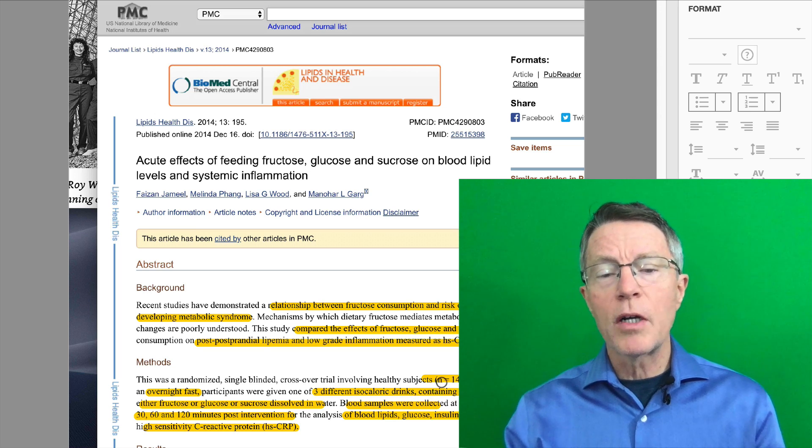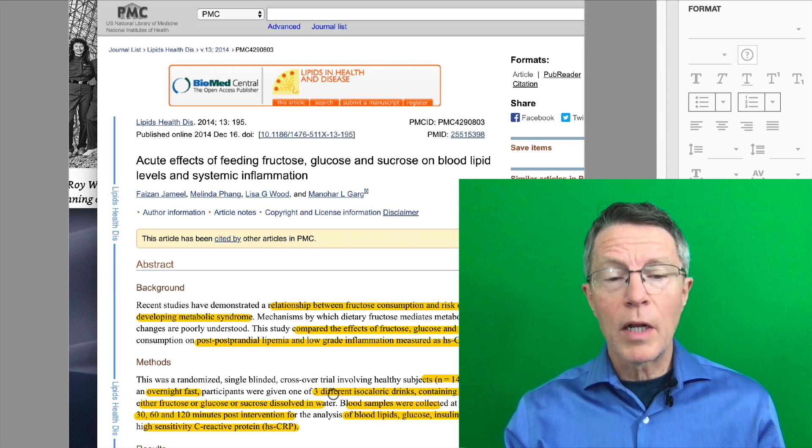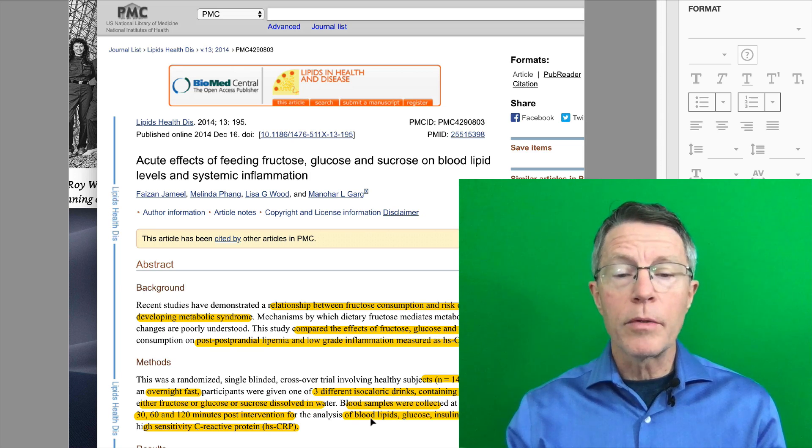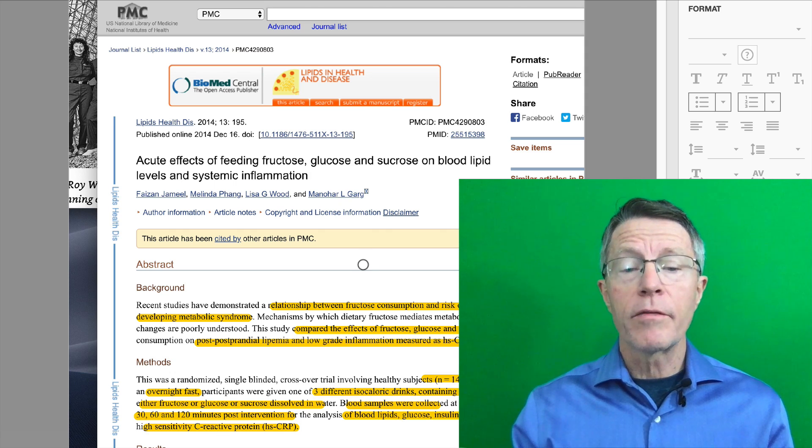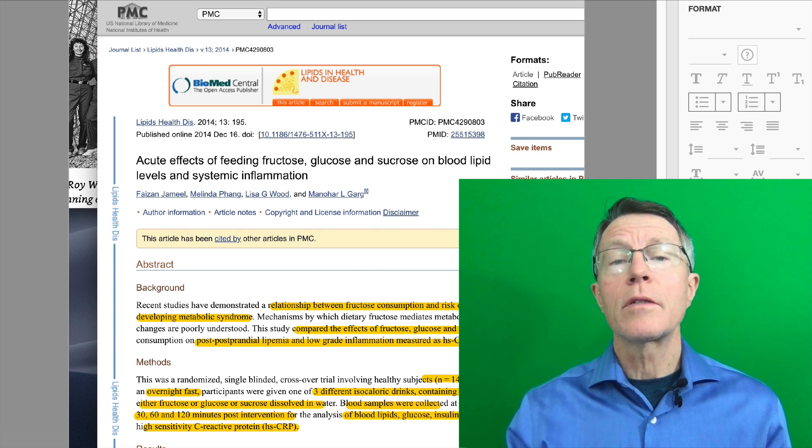Here's how they did it. It's a very small study, only 14 people. They had an overnight fast and then they gave these people, they blinded it and said, okay, you're gonna get one of three different drinks. Isocaloric meaning same number of calories. The drinks contain 50 grams of either fructose or glucose or sucrose. Then they took blood samples at baseline, then at 30, 60, and 120 minutes and analyzed those blood samples for glucose, insulin, and C-reactive protein as well as blood lipids. Again, cholesterol values.